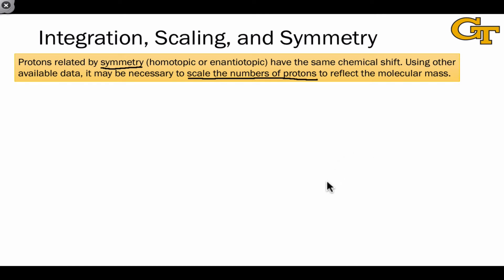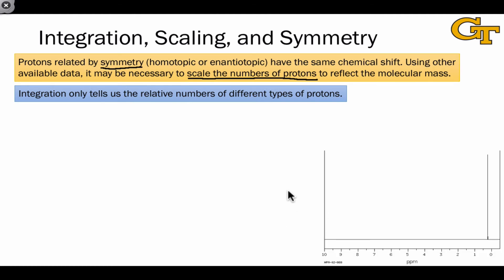Let me show you what I mean by this. The point really here is that integration only tells us the relative numbers of different types of protons. To get absolute numbers of protons, we need information about molecular mass. Here's a very simple NMR spectrum. And if you were to tell the computer that worked up this spectrum to calculate the integration for the single peak here, it would give something like this, and because this is the only peak in the spectrum, it's going to assign an integration value to this of 1.0. It doesn't know what else to do. This is the smallest integration, and so by convention, it's going to assign it 1.0.